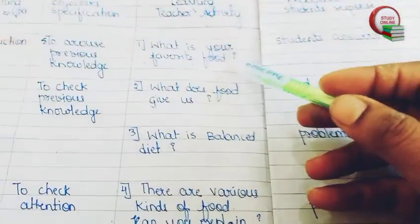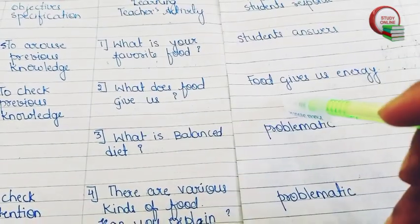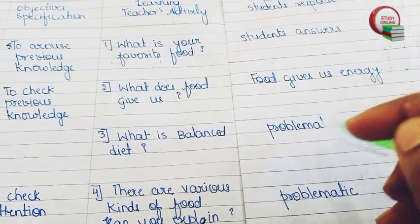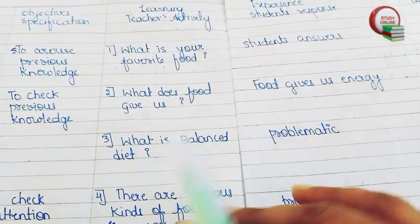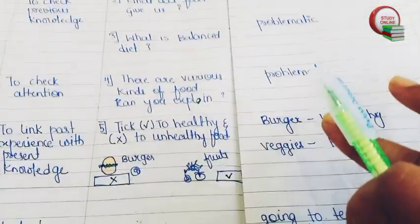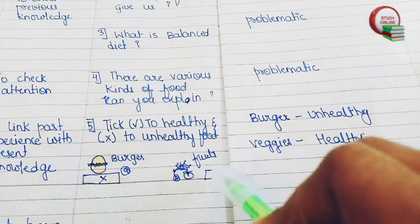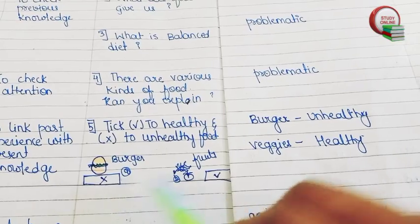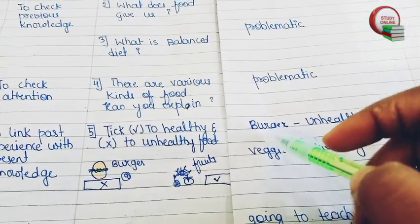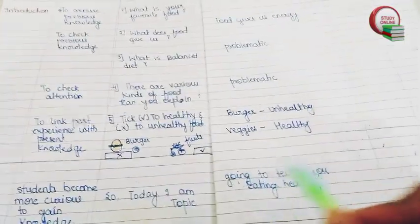The first question is: what is your favorite food? Students will answer with their favorite food. Second: what does food give us? Students will answer that food gives us energy. Third: what is a balanced diet? This may be problematic for Class 3 students as they may not be able to explain it properly. For the last question, we draw a burger and fruits and ask students to tick the healthy food and cross the unhealthy one — so students cross the burger and tick the fruits. Then we state: today I'm going to teach you about eating healthy.